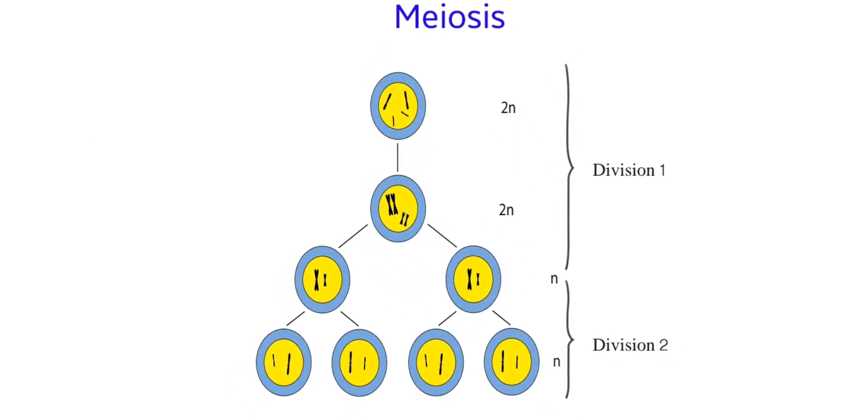We will move on to the other kind of cell division: meiosis. This cell has four chromosomes. Each chromosome splits into two making a second set of chromosomes.